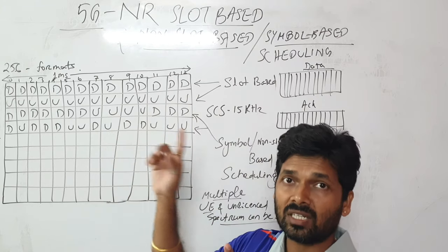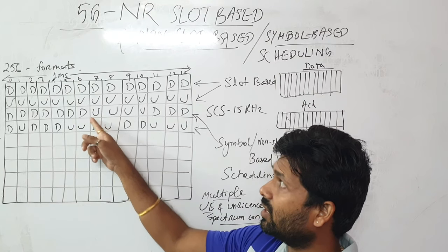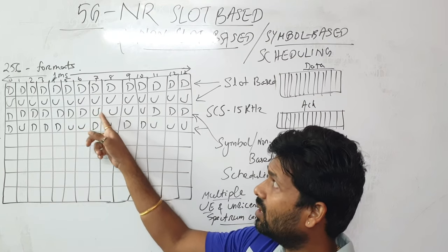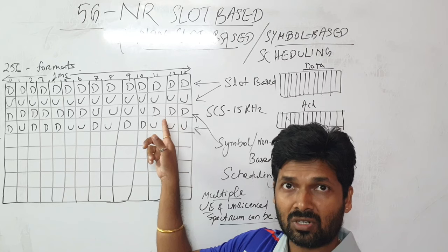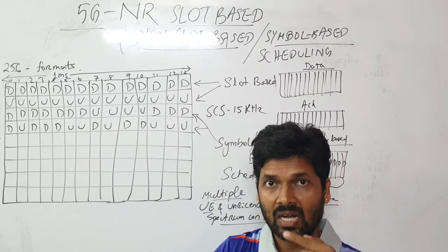If I go for this one, like sending downlink data and getting the acknowledgement, then I'm doing retransmission or something like that. That means within one millisecond I'm handling the round trip time.